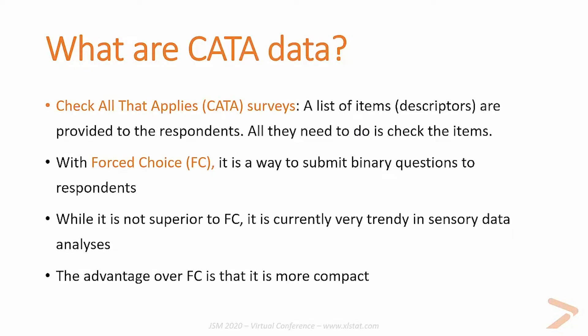So what are CATA data? CATA stands for Check All That Applies. CATA surveys consist of a list of items or descriptors provided to the respondents, and all the respondents need to do is check the items they think match the product they are currently evaluating. An alternative for CATA is force choice surveys — another way to submit binary questions to respondents. While CATA is not superior to force choice, it is currently very trendy in the sensory data analysis area.